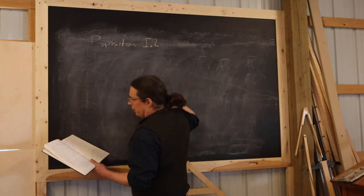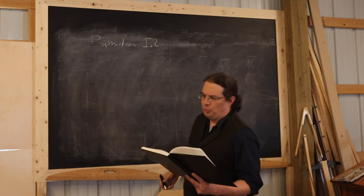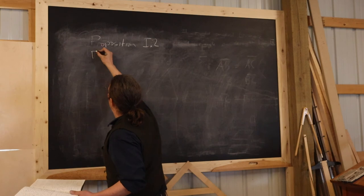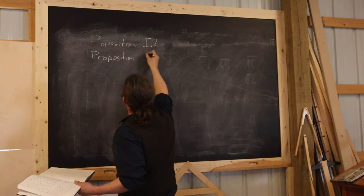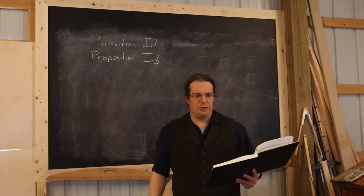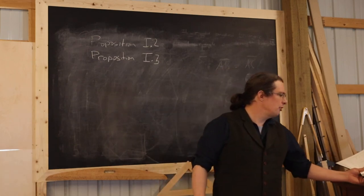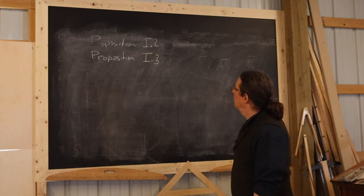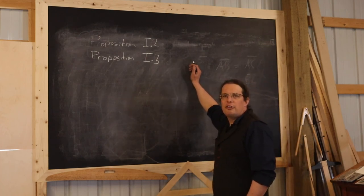Proposition Two of Book One says: to place a straight line equal to a given straight line with one end at a given point. Proposition Three says: to cut off from the greater of two unequal straight lines a straight line equal to the less.